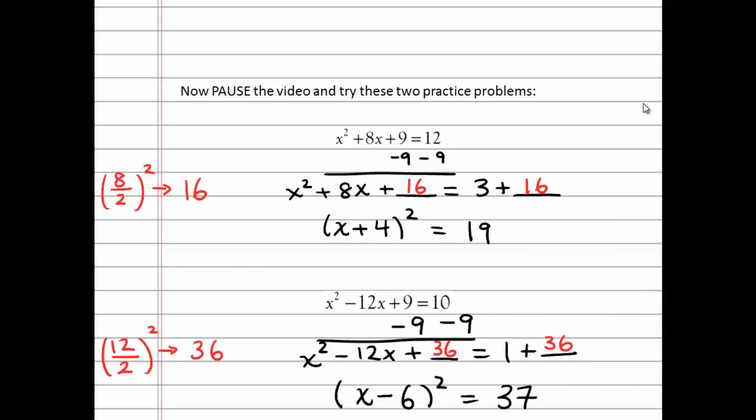The first step in both of these example practice problems is that you get your constant term over to one side. If you notice, your b value in the first example was positive 8, so to find your third term, you'd take half of 8, you'd square it, and you'd get 16, making sure then to add 16 to both sides of the equation.